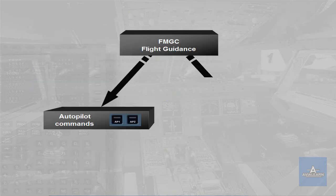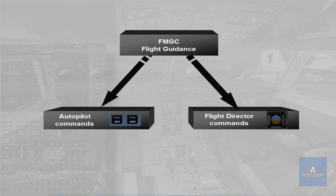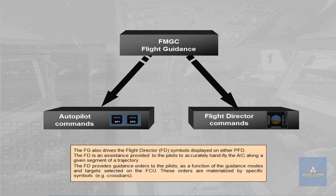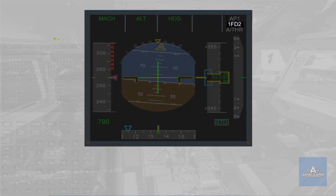The FG also drives the flight director (FD) symbols displayed on either PFD. The flight director is an assistance provided to the pilots to accurately hand-fly the aircraft along a given segment of a trajectory. The flight director provides guidance orders to the pilots as a function of the guidance modes and targets selected on the FCU. These orders are materialized by specific symbols, such as crossbars. The flight director symbols are displayed on either PFD. The symbols on PFD-1 are driven by FG-1; those on PFD-2 are driven by FG-2. The engagement status of the flight director is indicated on the FMA.